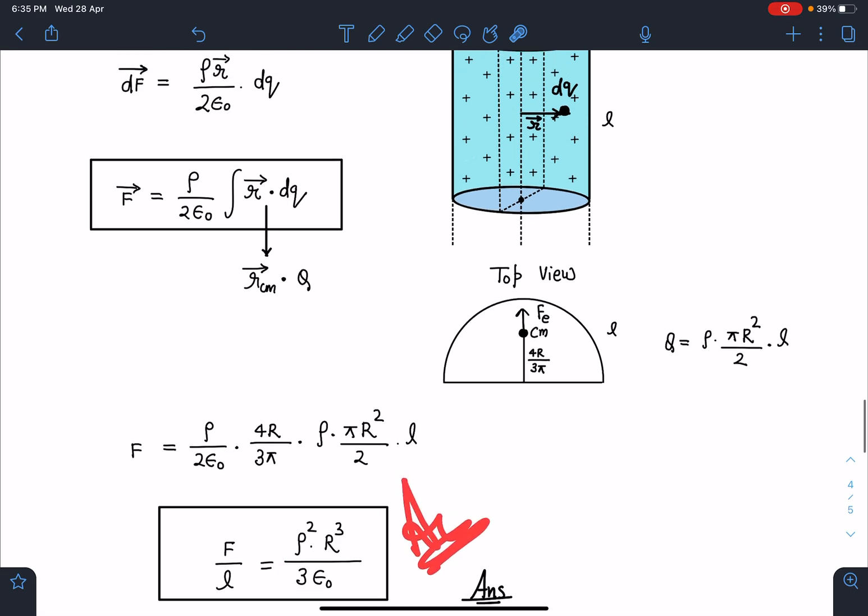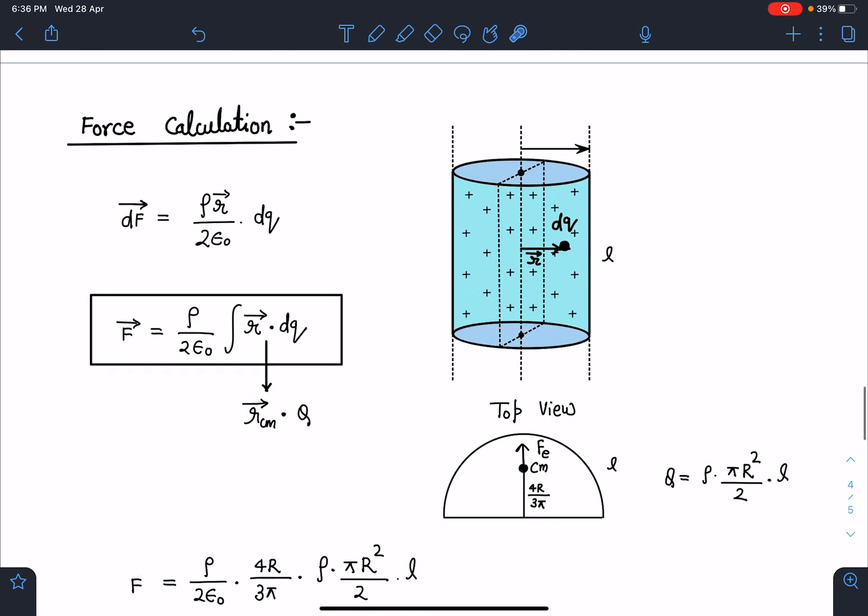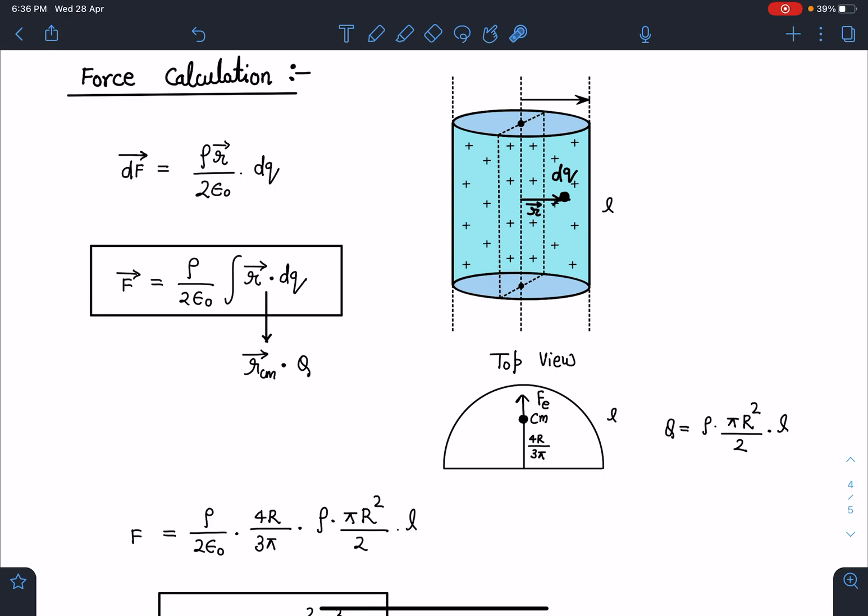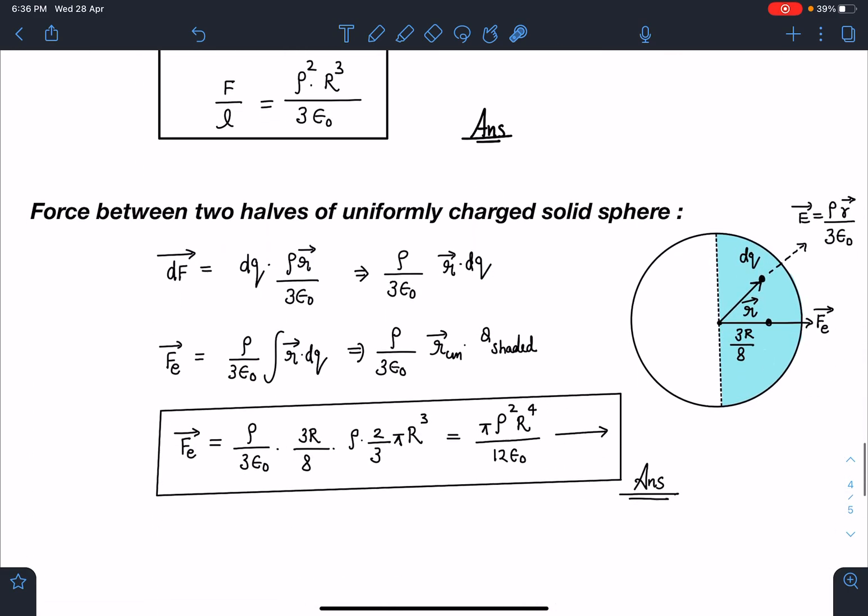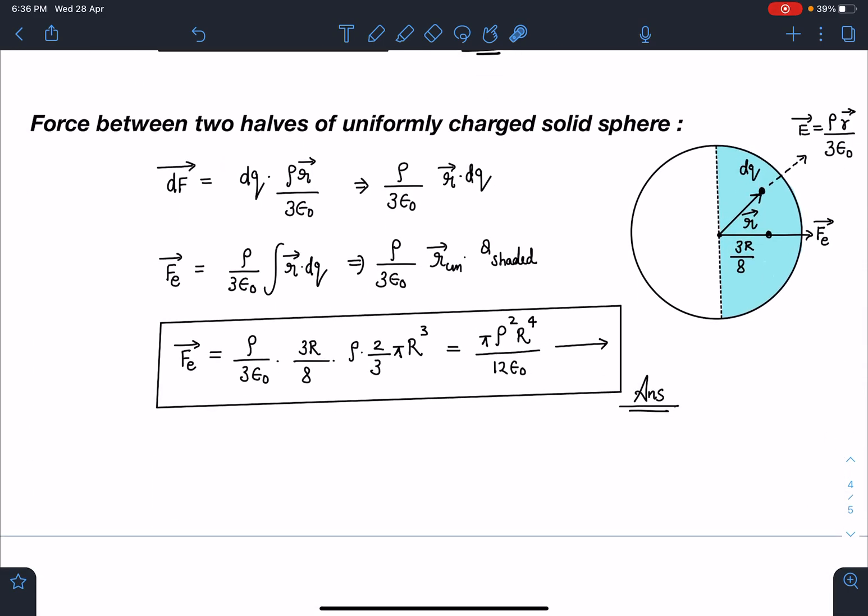Trust me, if you try by regular method, the standard method for this problem, it will take at least two to two and a half pages. It's a very long problem. I am sure now you are getting the idea of this and you can exploit this r_cm dq relation anywhere. I will take another example and in the series of videos I will discuss many problems where we are going to use this shortcut trick.